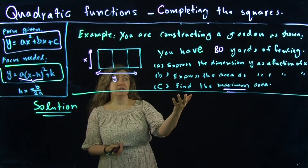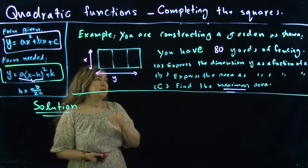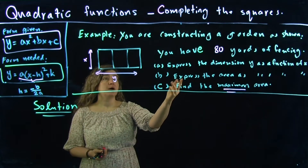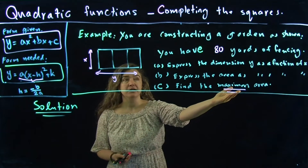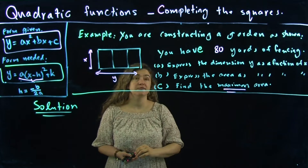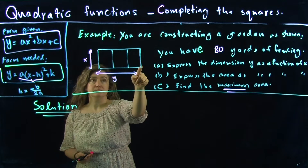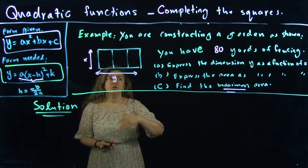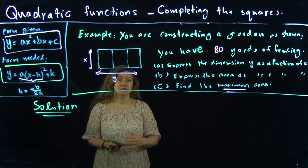You are constructing a garden as shown. The garden is a rectangular garden with three plots in it. You have 80 yards of fencing, and the goal of the entire problem is to maximize the area of a garden that has 80 yards of fencing around it. The fences go all around it and the dividers need some fence also. The problem is helping you set up this optimization issue.